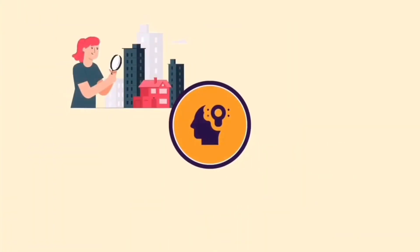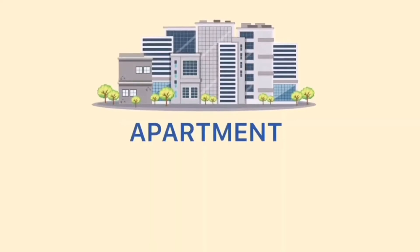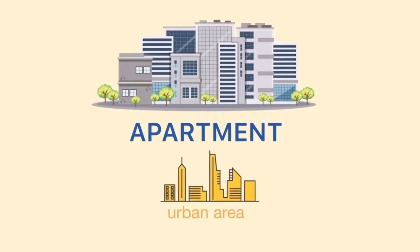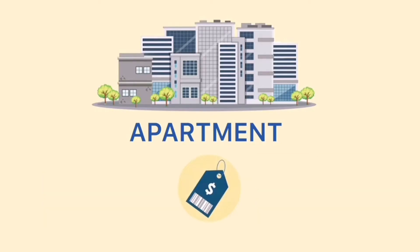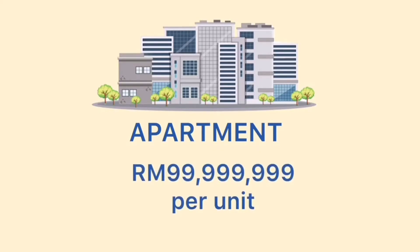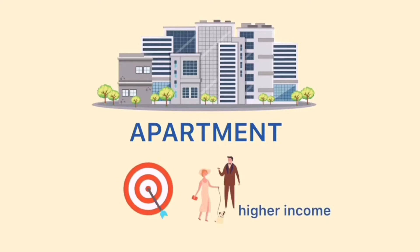Have you ever imagined how an apartment complex is being managed by its management? An apartment is located in urban areas such as in Kuala Lumpur and Selangor. The price range of an apartment is 349 ringgit per square feet and can reach to nearly 100 million ringgit per unit, meaning that the targeted residents of the apartment are people with higher income.